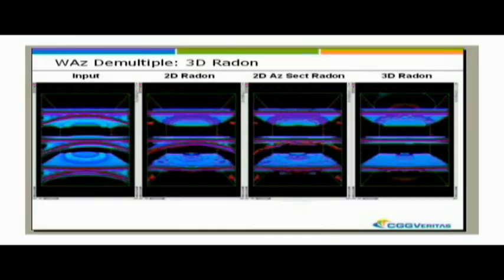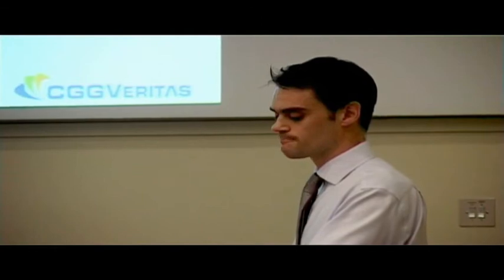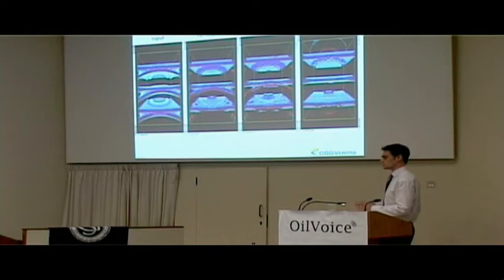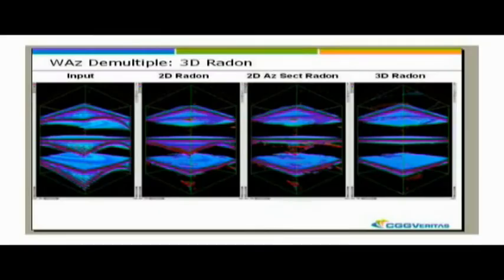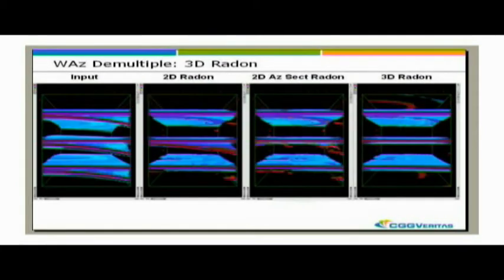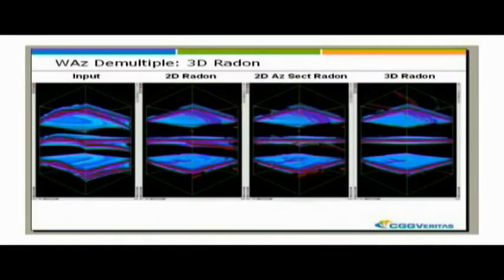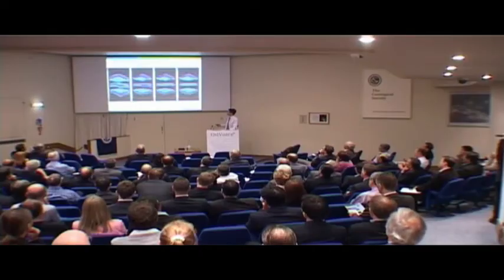We developed a 3D Radon transform. This came out of one of our dedicated centers in Europe in collaboration with the client. Using a synthetic example: we have three primaries, which are the flat events, and two multiples, which are the dipping bodies. The multiple in the middle is anisotropic — a dipping multiple. 2D algorithms, or even 2D algorithms applied by azimuth sectors, can't provide discrimination of this dipping multiple, whereas the 3D algorithm can. These 3D data collections allow us to apply 3D algorithms and improve things like denoise and demultiple.